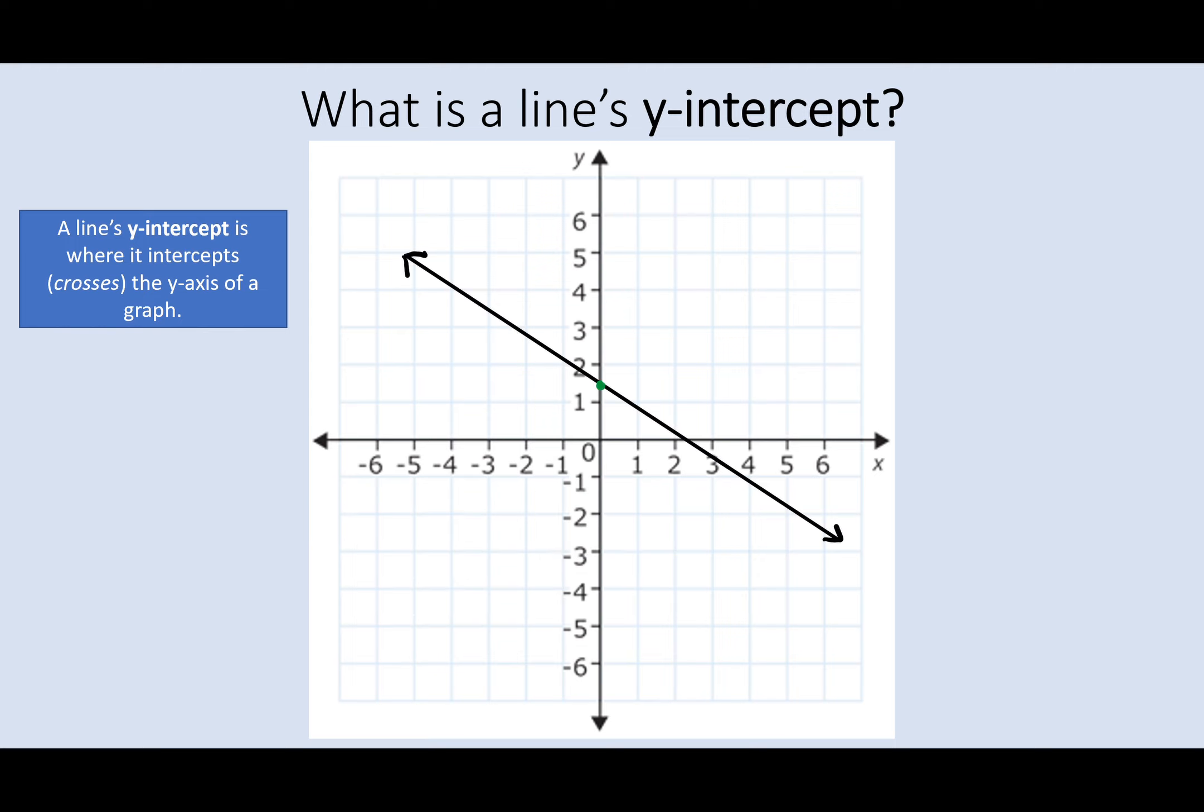Another example. How about this line? Well I can tell that this line crosses the y-axis right there. So the y-intercept seems like it's halfway between 1 and 2. Well halfway between 1 and 2 is 1.5. So the y-intercept of this line is 1.5.